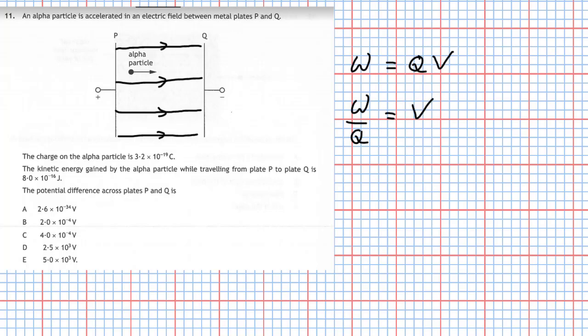So what was the work done? The work done appeared as kinetic energy, so that was going to be 8.0 × 10⁻¹⁶ joules, and divide that by the charge on the alpha particle, which was 3.2 × 10⁻¹⁹ coulombs. We do that in our calculator and we end up with an answer of 2.5 × 10³ joules per coulomb. But we know that a joule per coulomb is really a volt, so we have 2.5 × 10³ volts and our answer will be D.